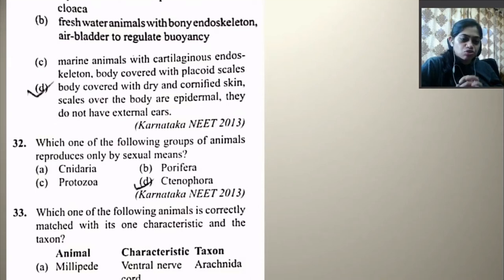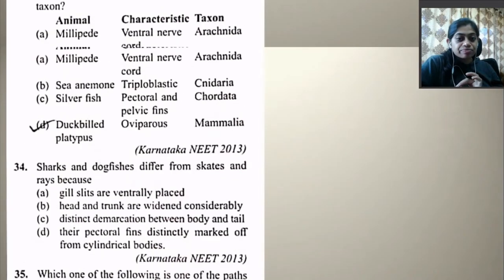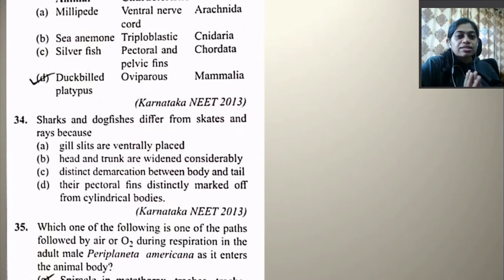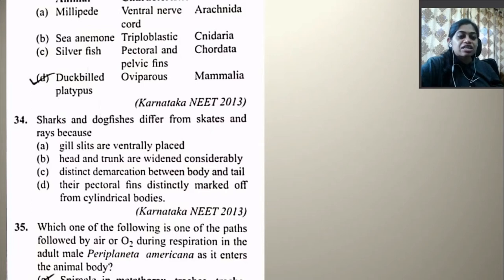Which one of the following animals is correctly matched with its one characteristic and taxon? Millipede — ventral nerve cord — Arachnida, no. Sea animal — triploblastic — Cnidaria, no. Silverfish — pectoral and pelvic fin — Caudata, no. Duck-billed platypus — oviparous and Mammalia — yes, this is right. It is the exception among mammals which shows oviparous mode of development.